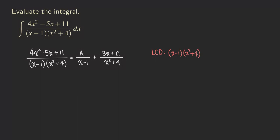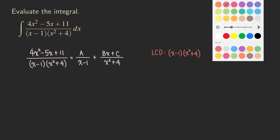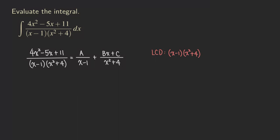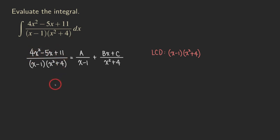So the LCD we need to multiply is x minus 1 times x squared plus 4. We are going to multiply the left side of the equation by this LCD, and as you can see, we can cancel the x minus 1, and we can also cancel the x squared plus 4. So now we are just left with the numerator.